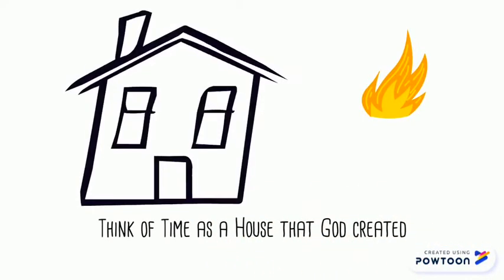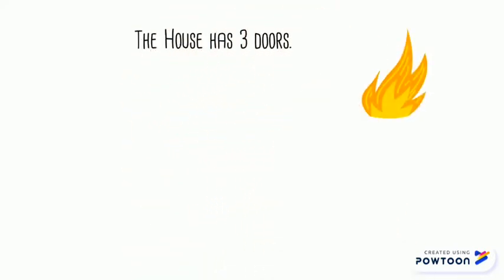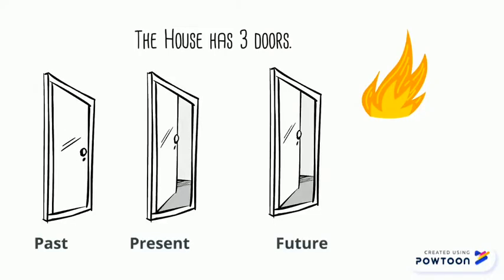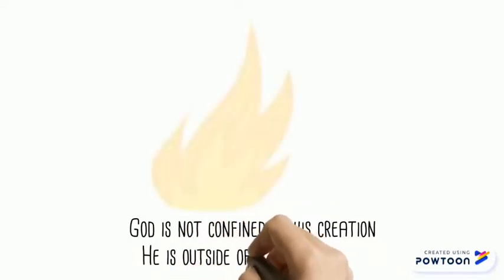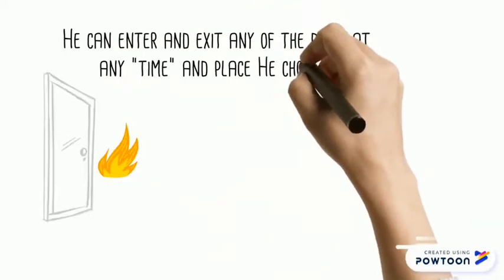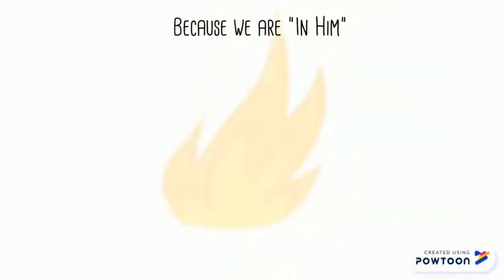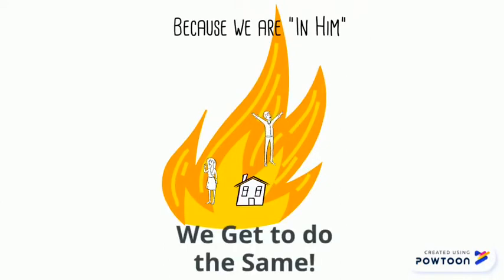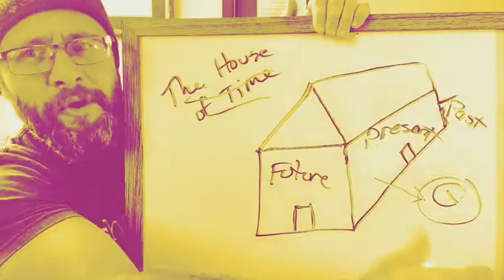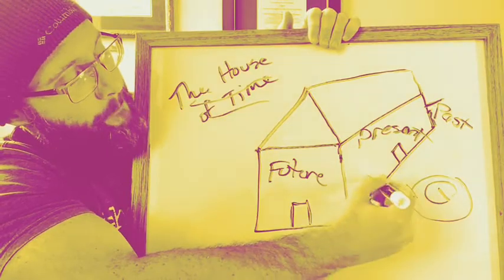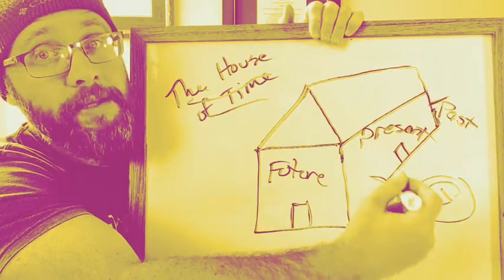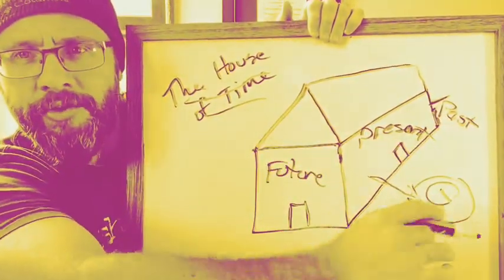So let's look at time like this — this is the house of time, and God created it. We have the past, the present, and the future. God is outside of the house of time that he created, so he can enter into any of these doors — future, present, or past — at any time he wishes, because he is not bound by the confines of his own creation. When we were transferred into the kingdom of light, we were also given this trans-dimensional, trans-time-and-space quality because we are enfolded into him. We are in Christ and Christ is in God and he is in us — the whole John 17 reality. God is outside of time and space, and when we are in the spirit, we too are not bound by the confines of creation in this dimensional reality.